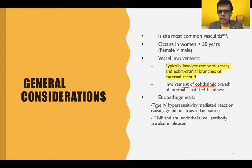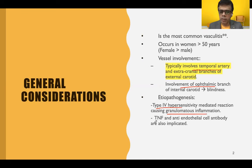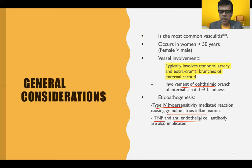This results in a type 4 hypersensitivity reaction that culminates in granulomatous inflammation of the blood vessel. Inflammatory cytokines like tumor necrosis factor and anti-endothelial cell antibodies have also been implicated, as well as certain MHC type 2 haplotypes identified in the causation of temporal arteritis.